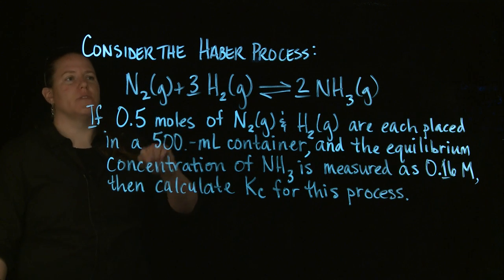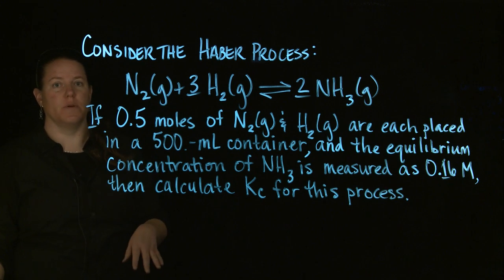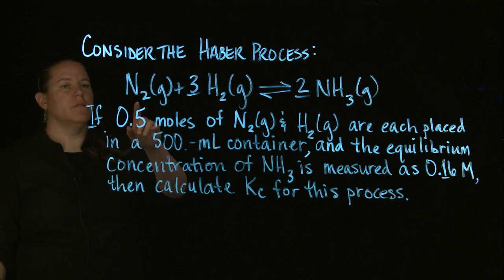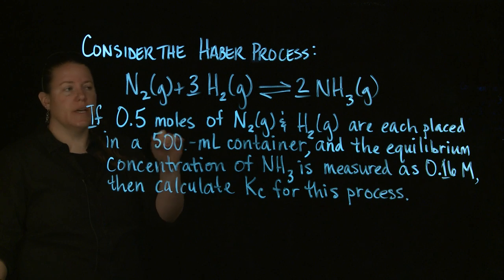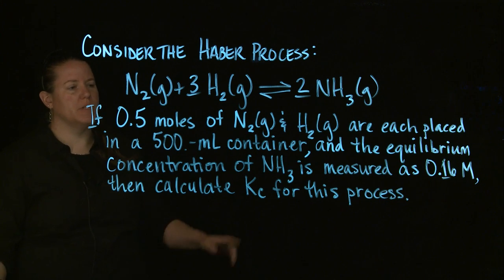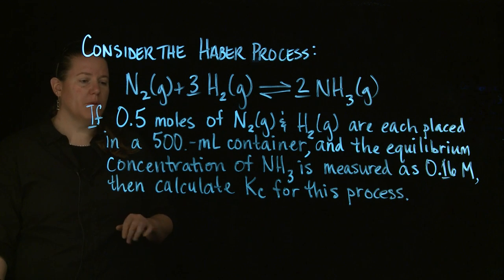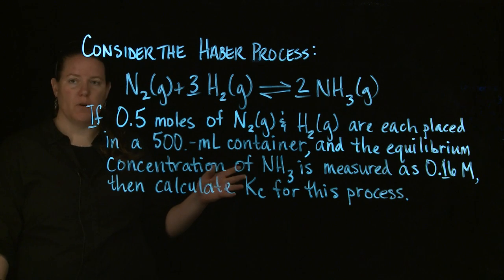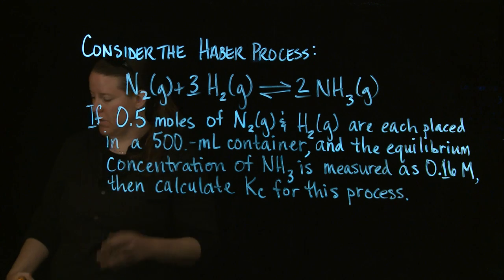Consider the Haber process. Fritz Haber came up with this process. It's still the way we make ammonia today. You have nitrogen as a gas combining with hydrogen as a gas to form ammonia as a gas. Let's say that we had 0.5 moles of nitrogen and hydrogen placed in a 500 milliliter container. The equilibrium concentration of NH3, of ammonia, is measured as 0.16 molar. I'm going to calculate the Kc for this process.